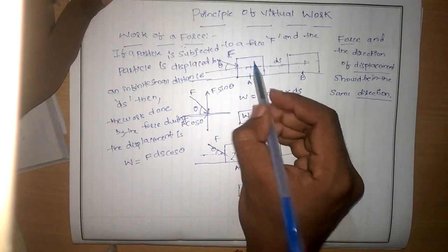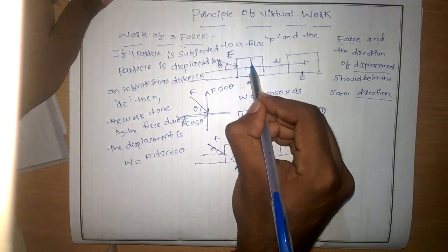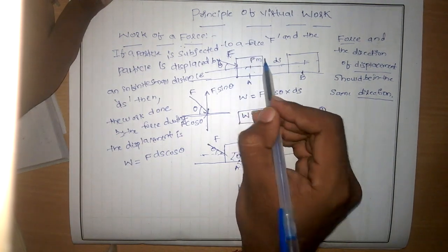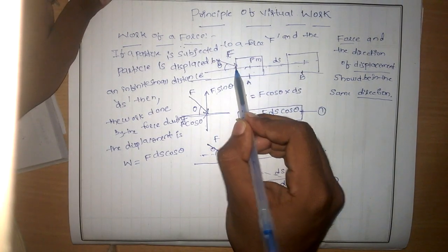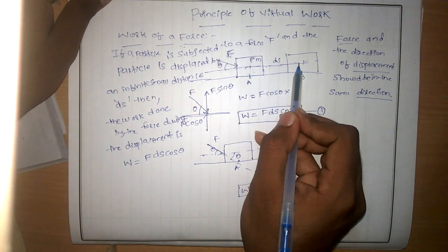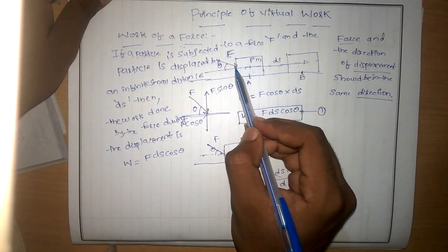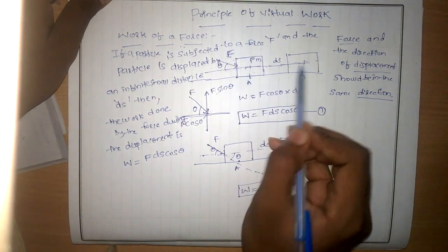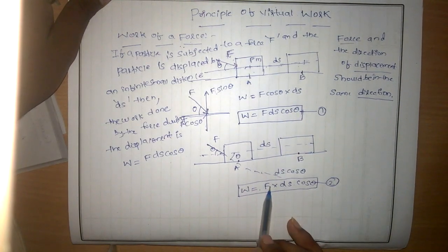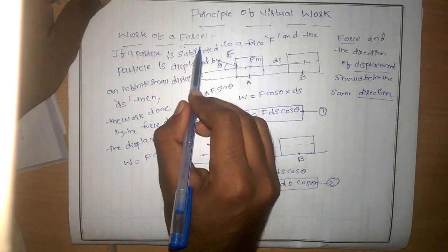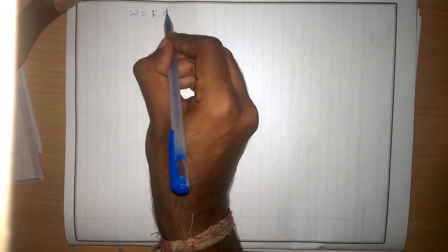Consider a block of mass m displaced from A to B. Whatever the direction of the force may be, we can either resolve the force along the displacement axis or resolve the displacement along the force direction — both results are the same. The formula for work of a force is W = F·ds·cos θ.